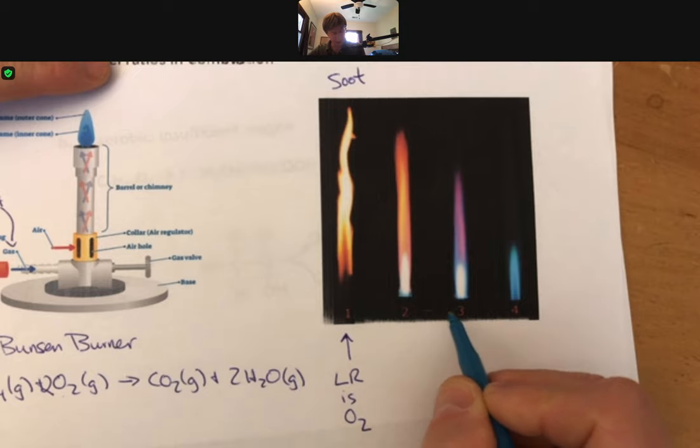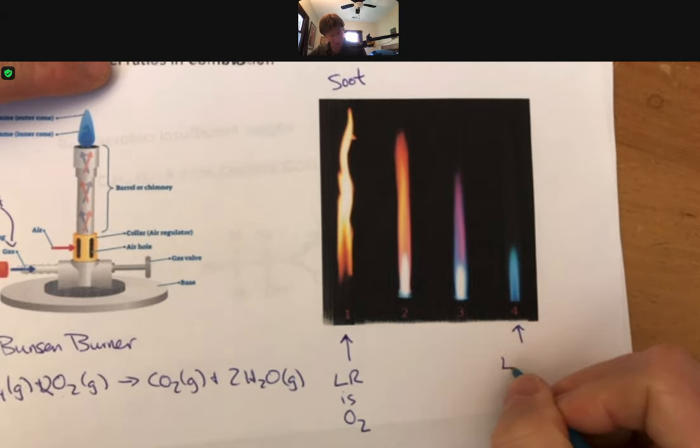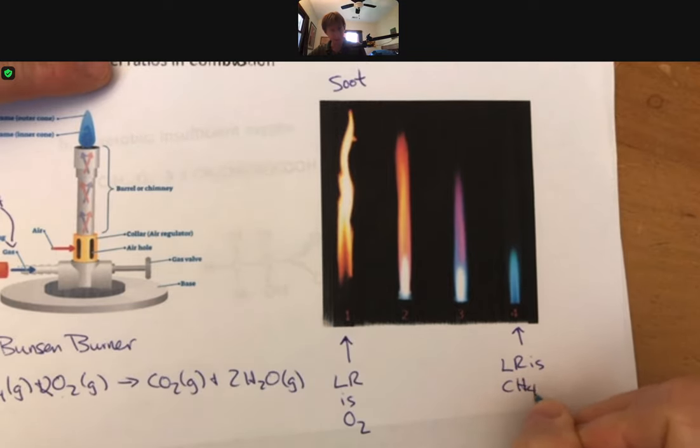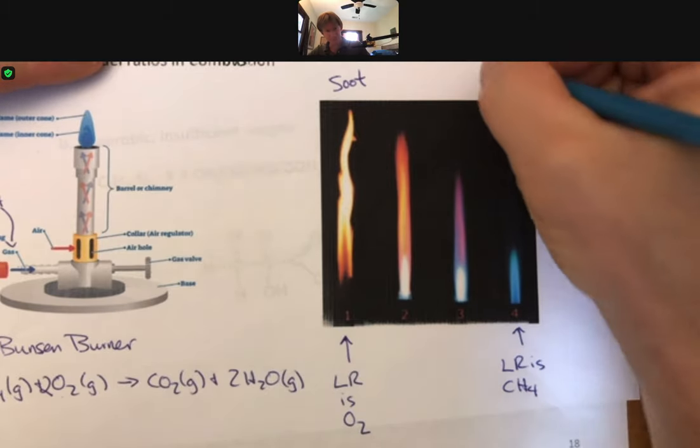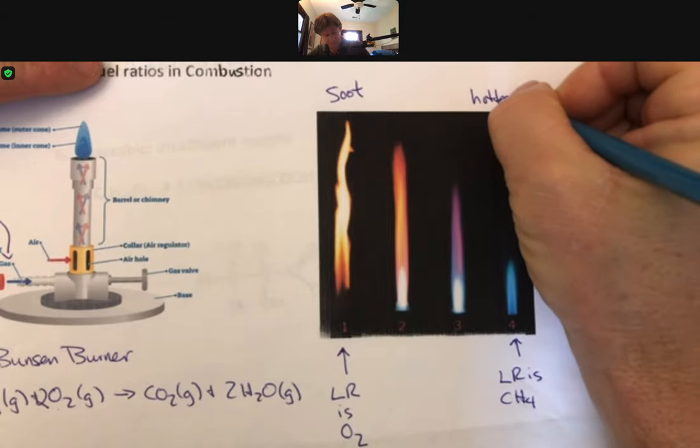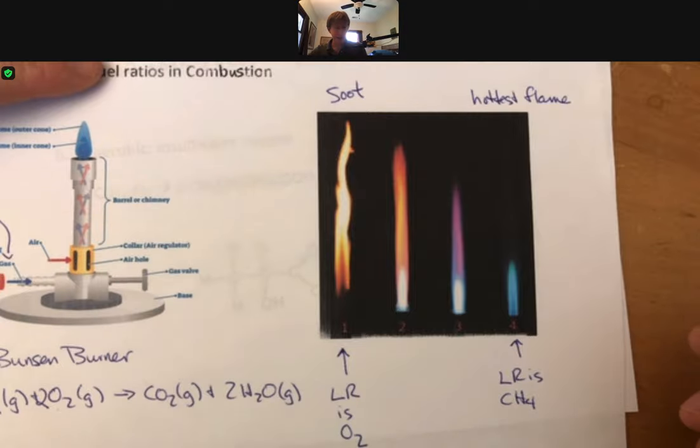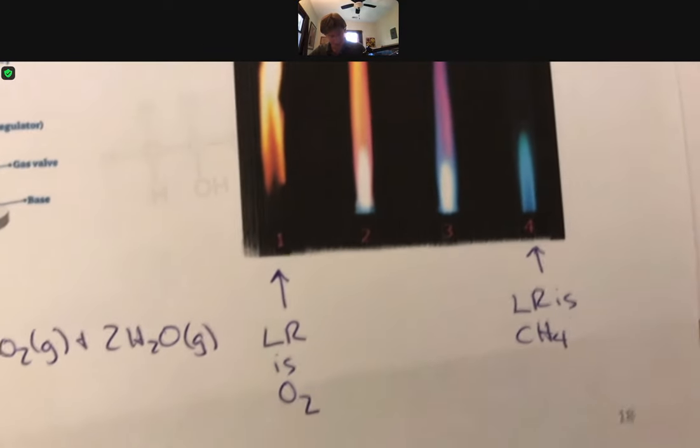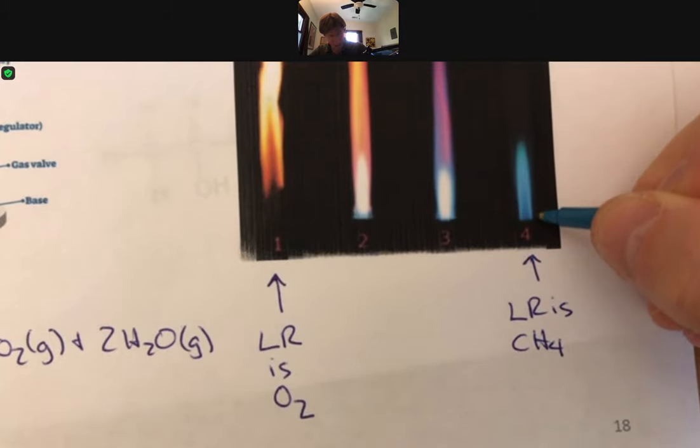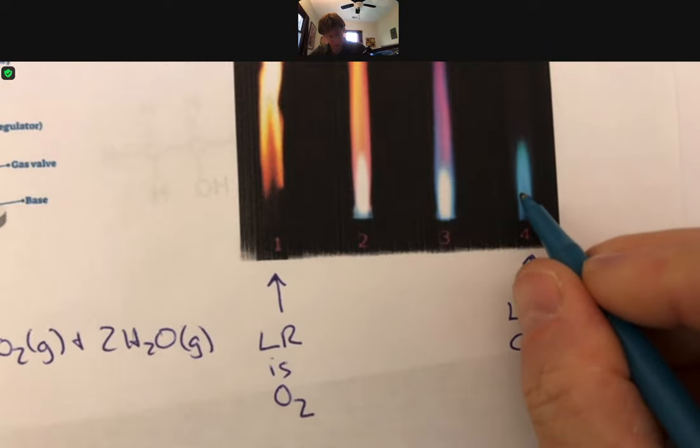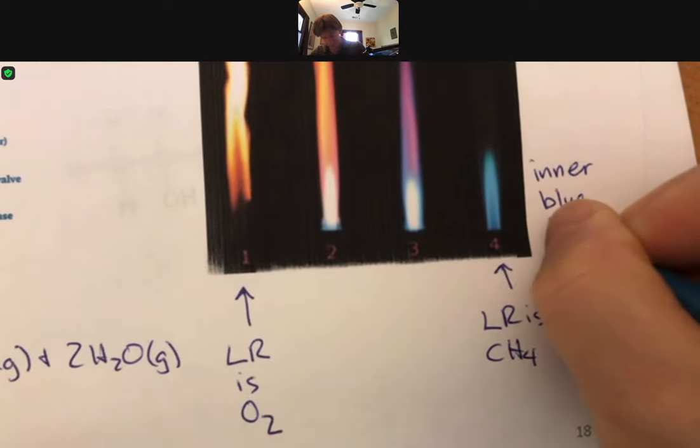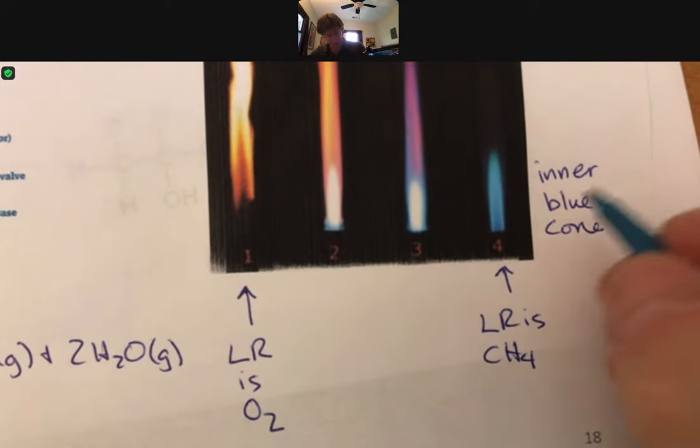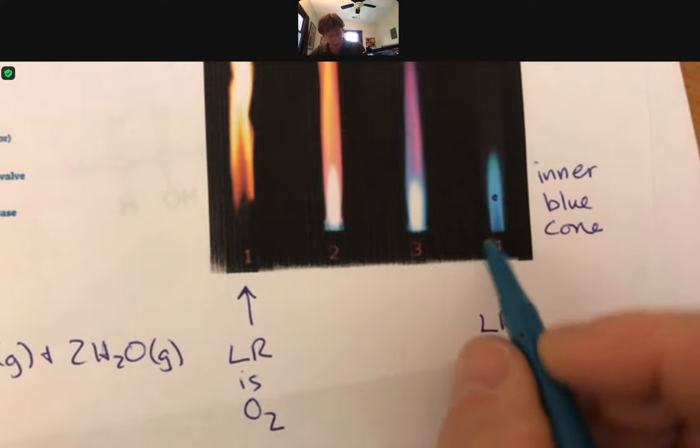Then we're increasing the oxygen, increasing the oxygen, until here the limiting reactant is methane CH4. It turns out that this is the hottest flame. If we zoom in again, in this flame there's an outer blue, light blue, and then there's an inner blue cone. That's on the picture over there as well, right at the tip of the inner blue cone right there.